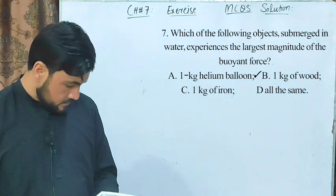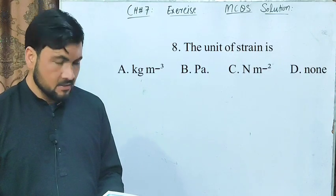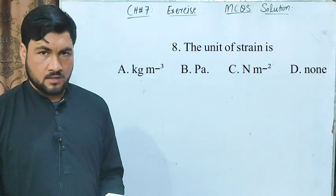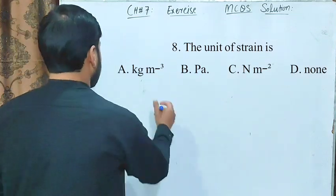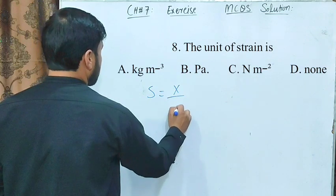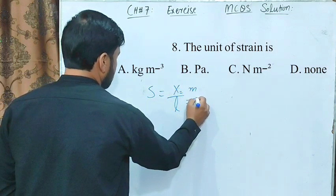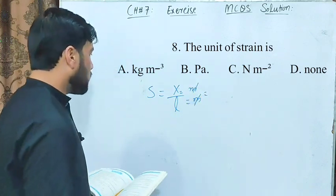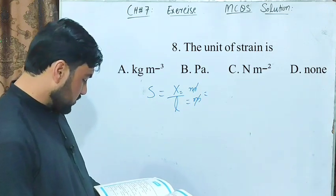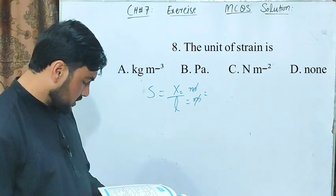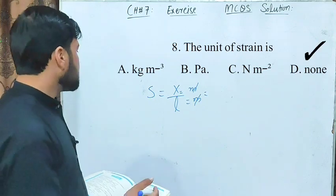MCQ number 8: the unit of strain — what is the unit of strain? Strain is defined as change in length divided by original length (x divided by L). Both x and L have units of meters, so meter divided by meter gives no unit. Strain is dimensionless. The correct option is no unit.